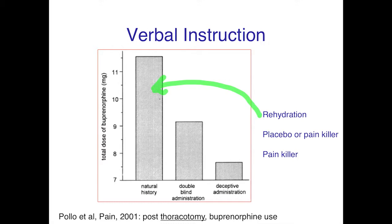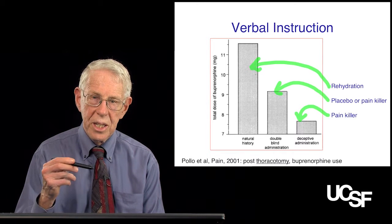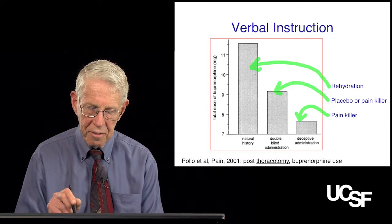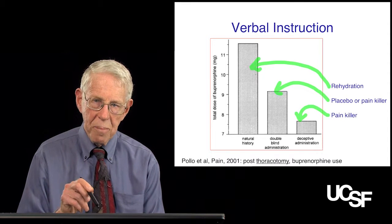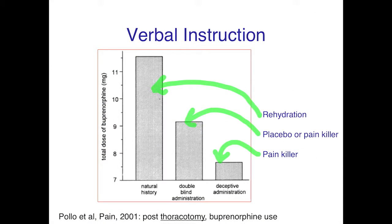Another group was told that they were part of a double-blind study where they could receive either morphine or saline in their infusion. And the final group was told that they were going to get morphine, a powerful pain reliever. What these bars represent is the amount of rescue medication the patients required to control their pain — in this case, buprenorphine, which is an opioid and an effective analgesic. The more pain they experienced, the more buprenorphine they would request. Patients expecting no pain reliever needed a lot of buprenorphine, as shown here.